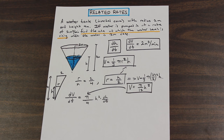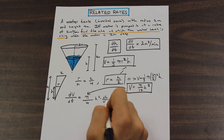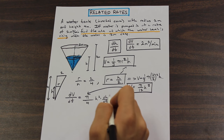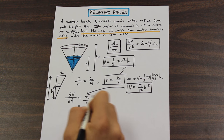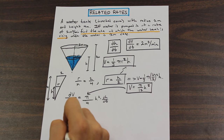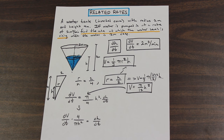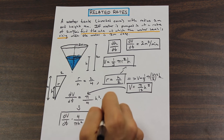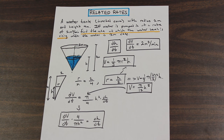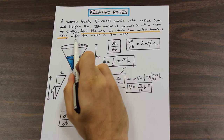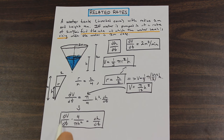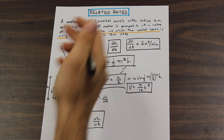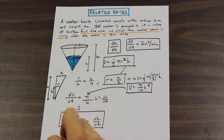We want to find the rate at which the height is changing with respect to time, so we isolate for DH/DT. Bringing the (π/4)H² term to the other side, we get DH/DT = DV/DT divided by (π/4)H². The question asks for this when the water is three meters deep, so H = 3, and we also plug in DV/DT = 2.